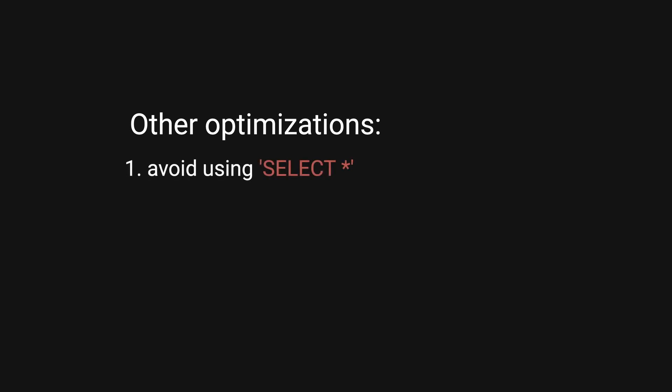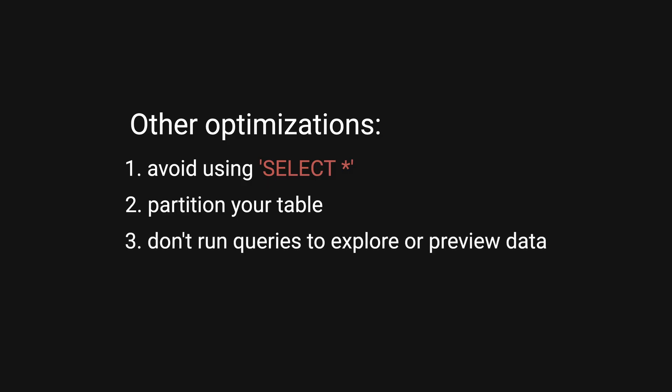They realized there are additional ways to optimize costs. One, avoid using the select star statement — only select columns that you need to limit the engine scan. Two, partition your tables. If you can determine how you're querying your data, partitioning can significantly reduce the amount of scanning being done. Three, don't run queries to explore or preview data, as this can result in unnecessary costs. BigQuery provides a preview option to view your data instead, for free.